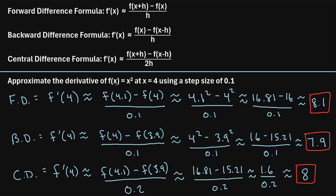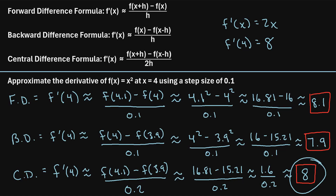For this particular example, it's easy to calculate the derivative analytically. f prime of x would just be 2x, so the actual derivative at x equals 4, in other words f prime of 4, would be 2 times 4, which is 8. We can see that all three methods gave a pretty close answer, and the central difference formula actually gave the exact answer. That is the general idea of how to use the forward difference, backward difference, and central difference formulas to numerically approximate a derivative.